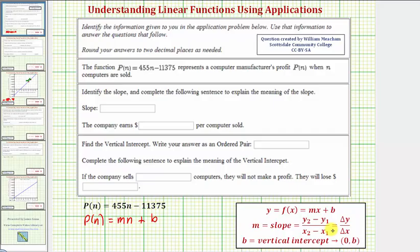So our first question is to identify the slope and then complete the sentence to explain the meaning of the slope. So again, looking at our function, notice m is equal to 455, which is the slope.